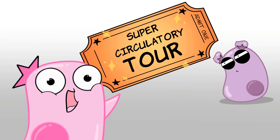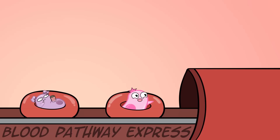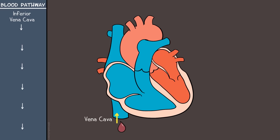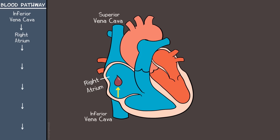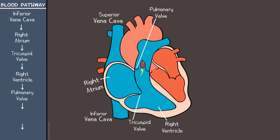Let's trace the pathway of blood through the heart. We start with deoxygenated blood in a human toe. It needs to get to the heart so it can be pumped to the lungs to pick up oxygen, then spread throughout the body. It travels through the inferior vena cava — as the superior vena cava is above the heart — and enters the right atrium. The right atrium contracts, pushing blood through the tricuspid valve into the right ventricle. The right ventricle contracts, pumping blood through the pulmonary valve to the pulmonary artery.